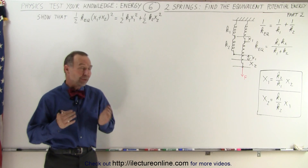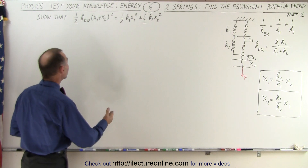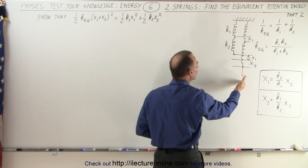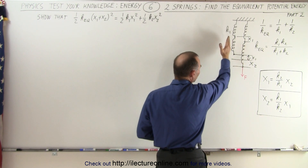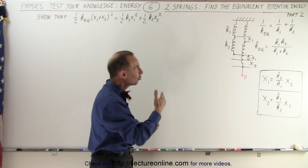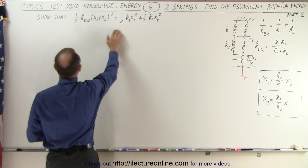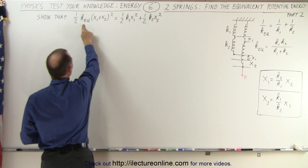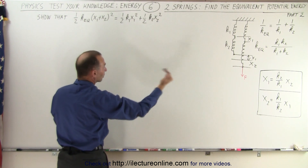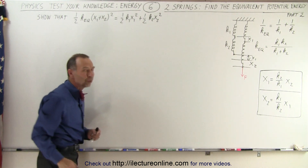Welcome to our lecture online. In the previous video we started showing that if we have two springs and we apply a force such that they elongate, the energy stored in the equivalent spring with the equivalent spring constant equals the sum of the potential energy stored in each individual spring. This is shown by the equation: one-half times the equivalent constant times (x1 plus x2) squared equals one-half k1 x1 squared plus one-half k2 x2 squared.